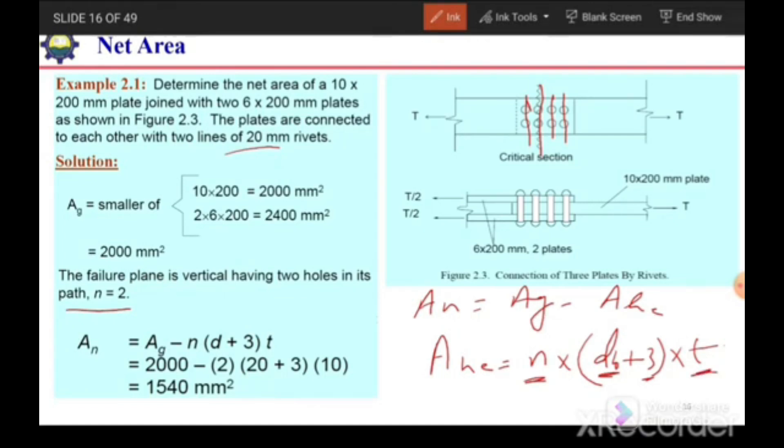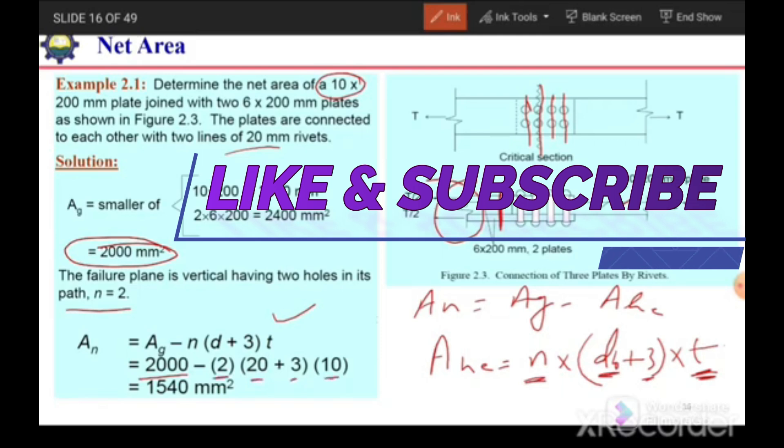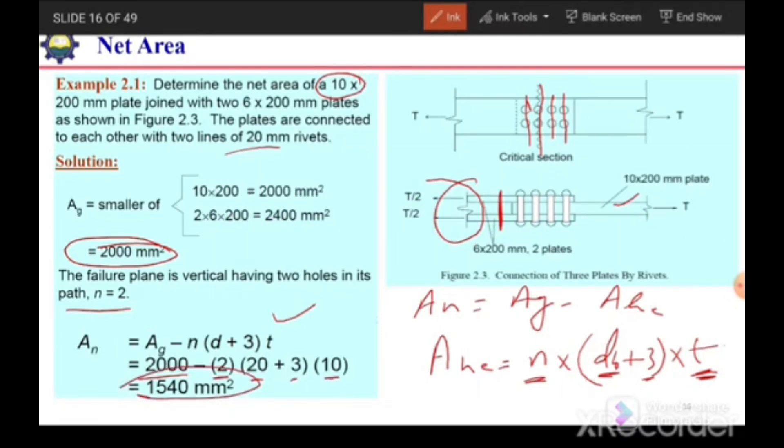t is the thickness of plate. In the case of this plate, because 2000 millimeter square area governs, we need to consider this 10 millimeter thickness. If the area of these two plates governed, then we would consider the combined thickness of those two plates. So here we will consider 10 millimeter. So the gross area is 2000 millimeter square, n is 2, diameter plus 3 is 23, and t is 10. From here we can find the net area.